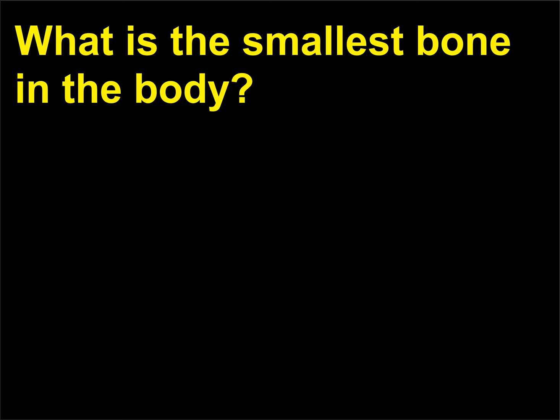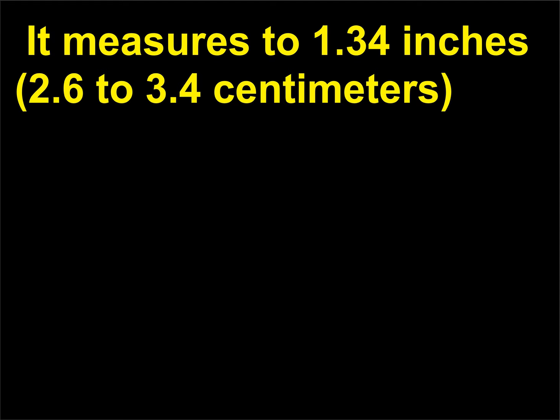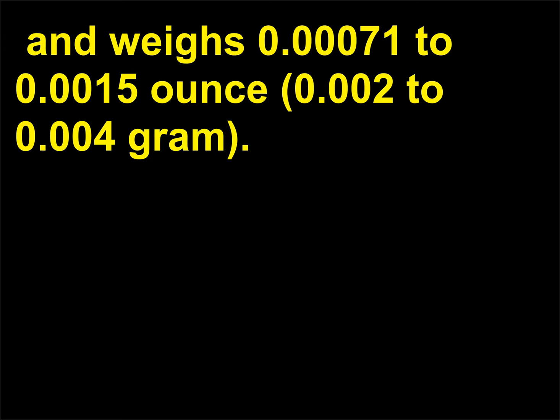What is the smallest bone in the body? The stapes (stirrup) in the middle ear is the smallest bone in the body. It measures 0.1 to 1.34 inches (2.6 to 3.4 centimeters) and weighs 0.000071 to 0.0015 ounce (0.002 to 0.004 gram).